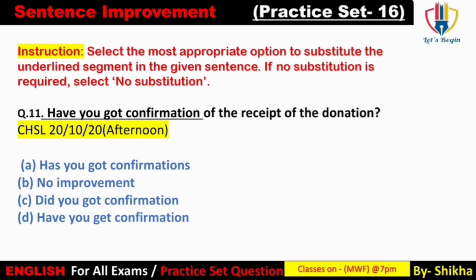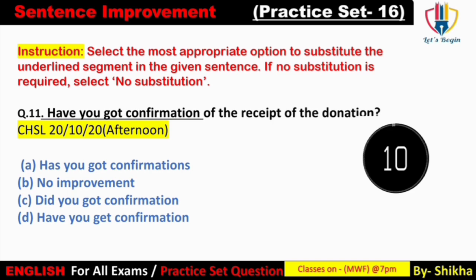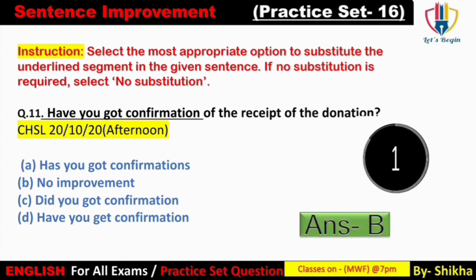Next: 'Have you got confirmation of the receipt of the donation?' Sentence bilkul sahih lag raha hai — 'have' ke saath verb 3 'got' use hoa hai, yani present perfect tense mein hai. Option A 'has you got' — 'you' ke saath 'has' nahi hota, galat. Option C 'did you got' — 'did' ke saath always simple form lagaya jata hai, 'get' hona chahiye tha. Option D 'have you get' — 'have' ke saath verb 3 lagaya jata hai, 'got,' simple form nahi. Answer: option B — No improvement. 'Have you got confirmation?'